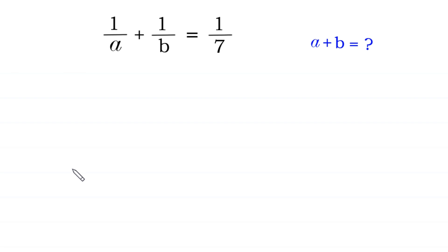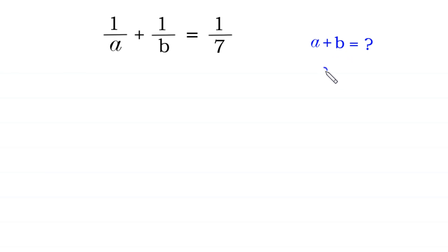Welcome to how to solve this very nice equation: 1 over a plus 1 over b is equal to 1 over 7. We need to find all possible values of a plus b, where a and b are positive integers.